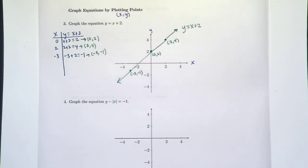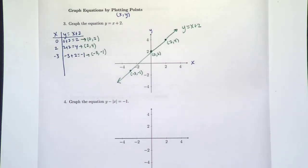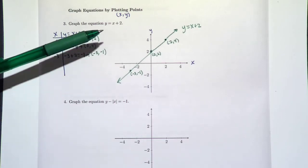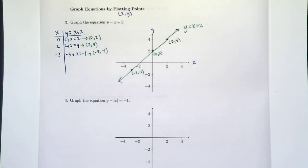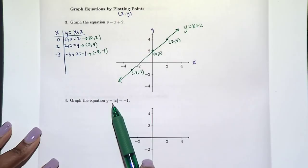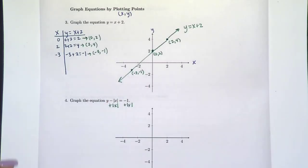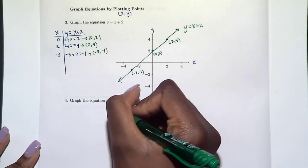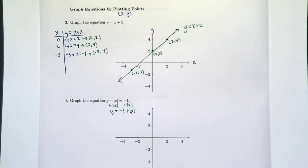Let's look at the next example, number 4: y minus the absolute value of x equals negative 1. There are two big differences from the previous problem. One is that we have an absolute value — whatever x is, positive or negative, it gives a positive answer. The other big thing to notice is that this is not already solved for y. So we need to solve for y first by adding the absolute value of x to both sides, which gives us y equals negative 1 plus the absolute value of x.